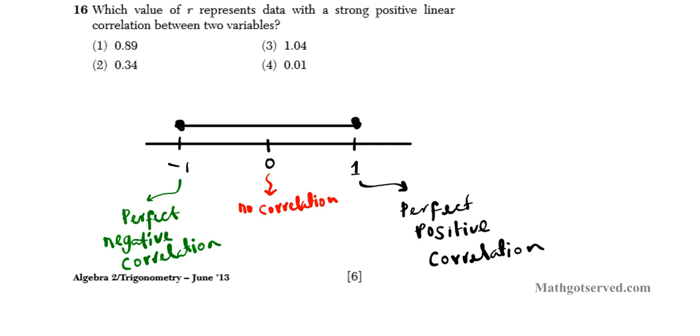So the question is how do you use this? The closer you are to 1, the closer you are to a strong positive correlation. And the closer you are to negative 1, the closer you are to a strong negative correlation. So the question is which of these numbers are closest to 1 since we are looking for a strong positive linear correlation. 0.89 is pretty close, somewhere here.